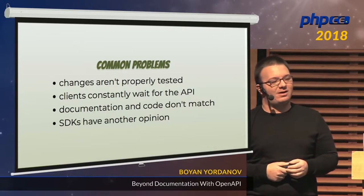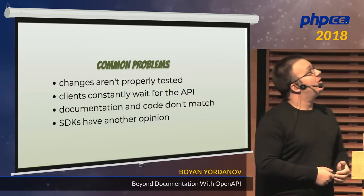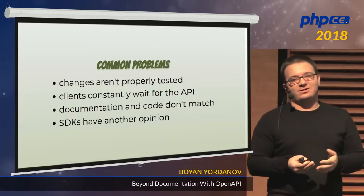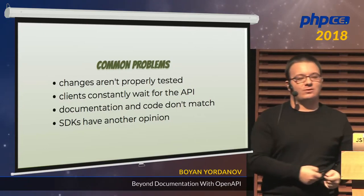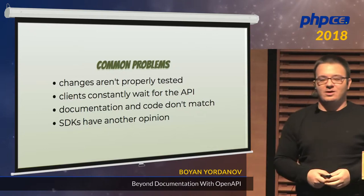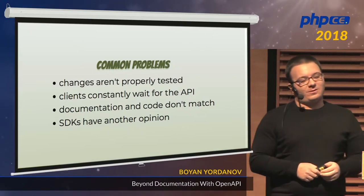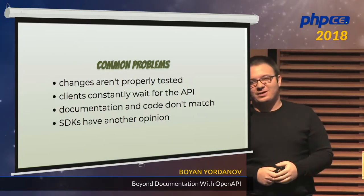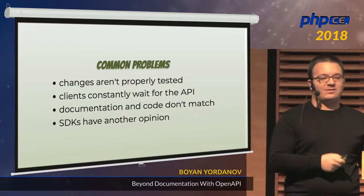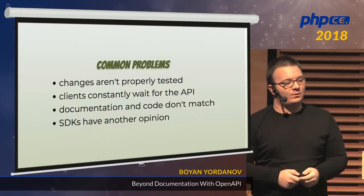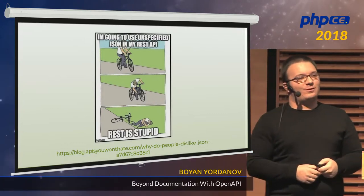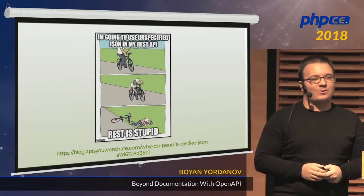The common things I've identified are: when we move fast, our changes are usually not tested properly because we need to ship that update as fast as possible. Usually the clients need to wait for the backend to be implemented before they can start working on the UI or the integration in general. And with third-party APIs, even with bigger companies that are supposed to do things properly, the documentation doesn't match with the actual API. And when you go on GitHub and check the SDK, it says something completely different. And a lot of people just shove some JSON to the client and everything breaks.